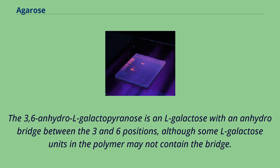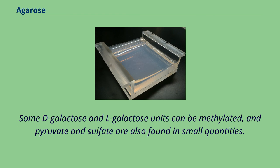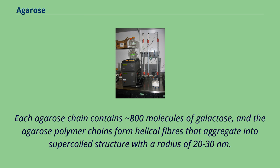The 3,6-anhydro-L-galactopyranose is an L-galactose with an anhydro bridge between the three and six positions, although some L-galactose units in the polymer may not contain the bridge. Some D-galactose and L-galactose units can be methylated, and pyruvate and sulfate are also found in small quantities. Each agarose chain contains 800 molecules of galactose, and the agarose polymer chains form helical fibers that aggregate into a supercoiled structure with a radius of 20 to 30 nanometers.